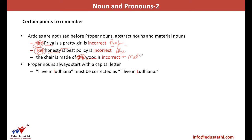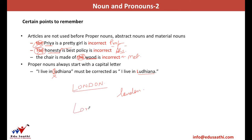Another thing we must always remember: whenever we are using a proper noun in a sentence, it will always start with a capital letter. It will never start with a small letter. For example, I live in Ludhiana — I will write Ludhiana with a capital letter. Likewise, it's London with a capital L, not a small l — even in running hand, it will be London.